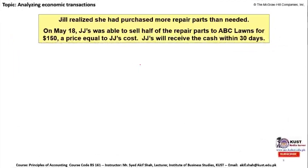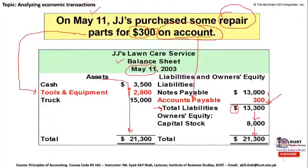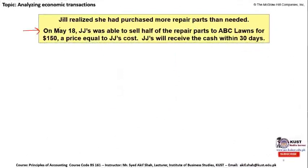Jill Jones realized she had purchased more repair parts than needed. Therefore, on May 18, JJ was able to sell half of the repair parts — worth $150 — to ABC Lawn Care Services at the same price as JJ's cost, meaning no profit or revenue was realized. ABC Lawn Care Services will pay this $150 within 30 days rather than immediately.